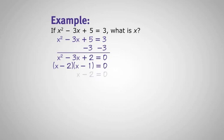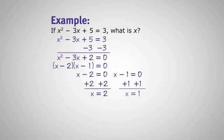So we have x minus 2 is equal to 0 and x minus 1 is equal to 0. In the first equation, add 2 to both sides to give you the solution of x equals 2. In the second equation, add 1 to both sides of the equation to give you a solution of x equals 1.